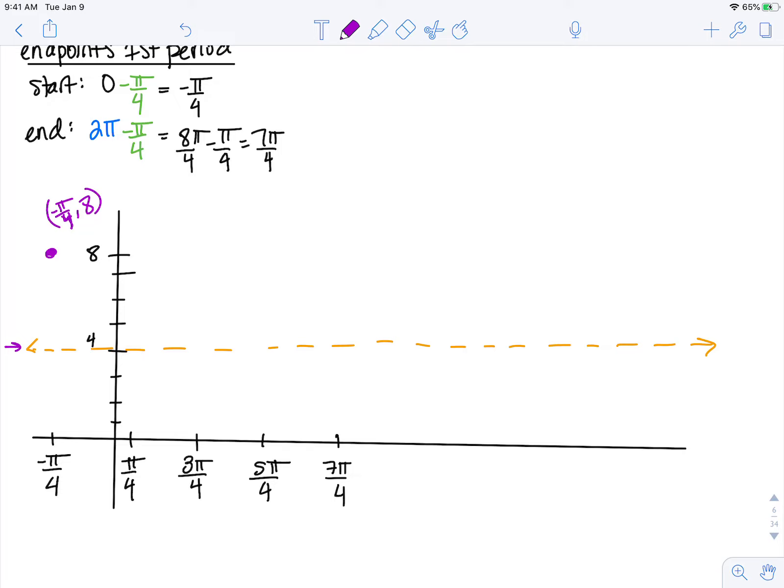Now at my next point, we know cosine should be hitting 0. But instead of 0, it's going to be at pi over 4, 4. Now I need to come down my amplitude of 4. That's going to hit here at 3 pi over 4, 0.